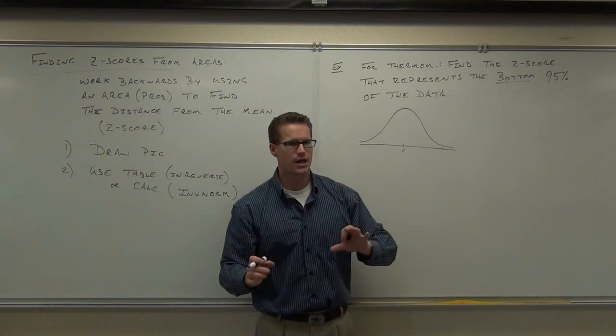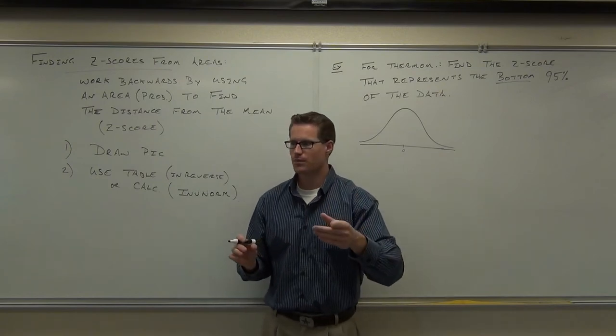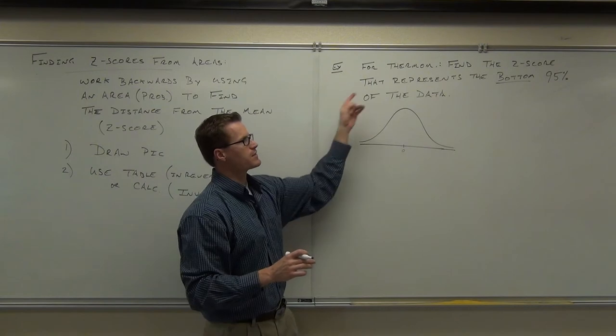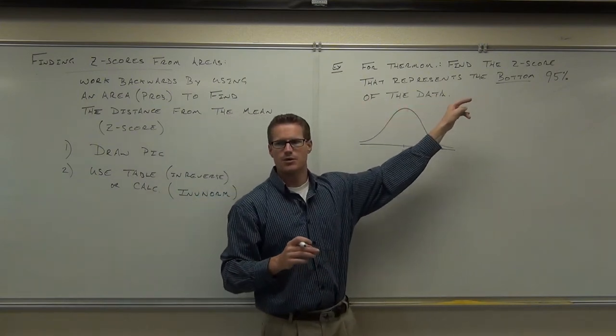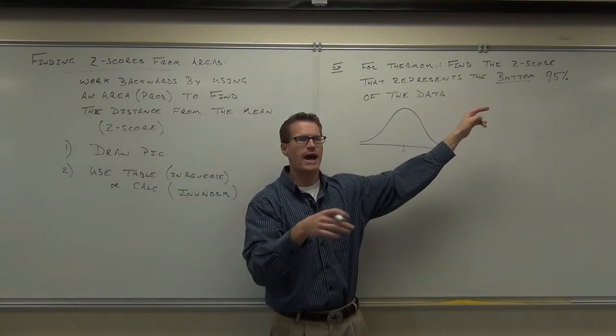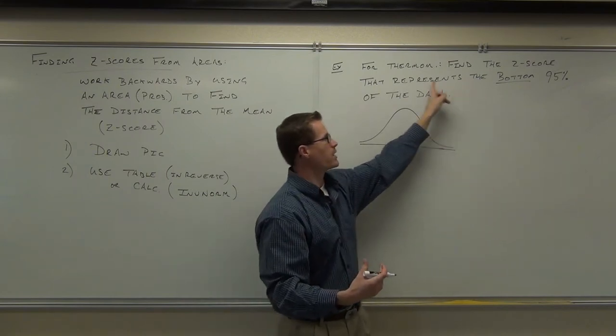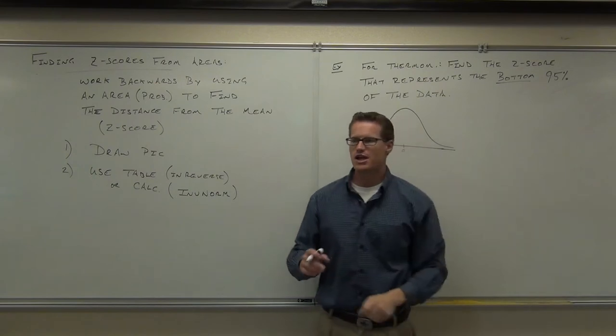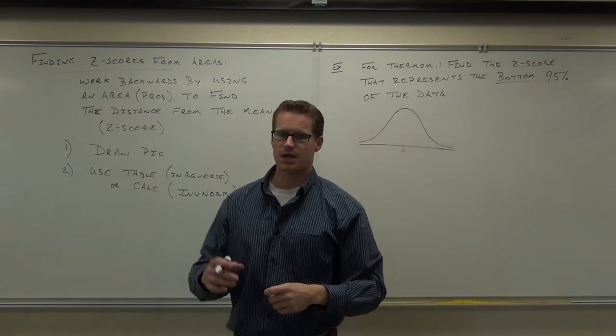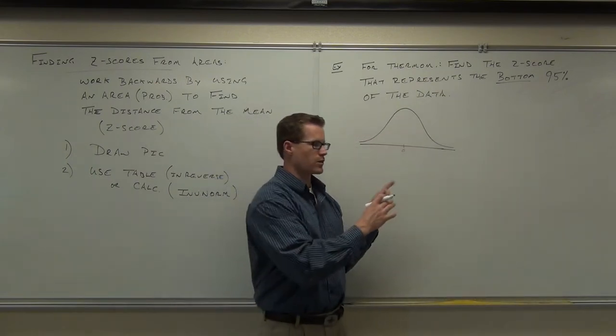Now we're going backwards. Instead of looking up a z-score, what I'm doing is, reading this problem real careful, this says find the z-score. Before I was given a z-score, I looked up the area. Now I want to find the z-score when I'm already given an area. You just have to be good about what the bottom, what the top, and what the middle means according to this picture.